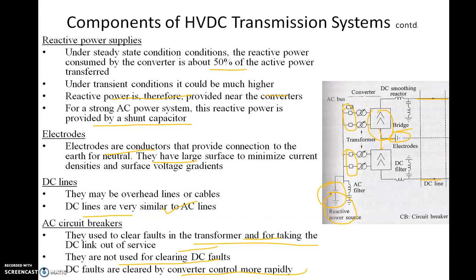DC faults are in fact more dangerous because they have a large and continuous current — there is no natural zero. Fortunately, we can control the DC fault current by controlling the firing angle of the bridge rapidly.